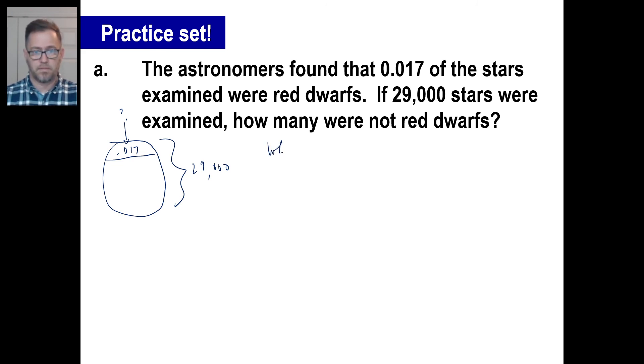What is 0.017 of 29,000? That's the question we're asking. So you can just make this into an equation. X equals 0.017 of 29,000. And there we go.